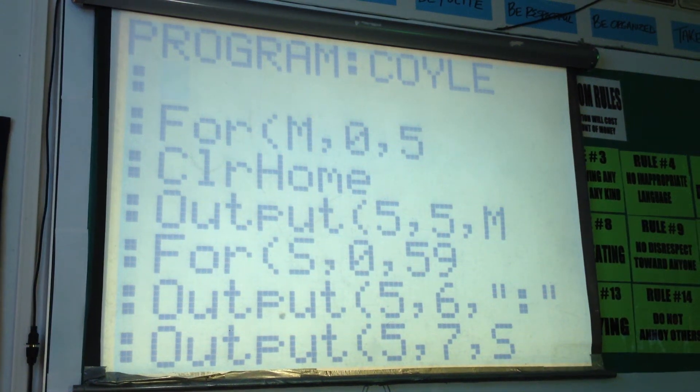We're reviewing last night's homework and we start with a loop of minutes from 0 to 5, then clear out, output 55M, that's going to state the minutes.